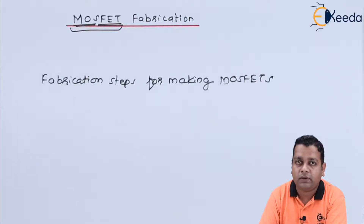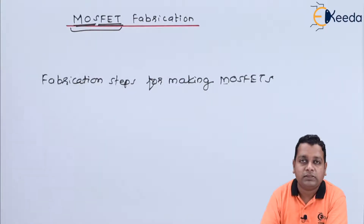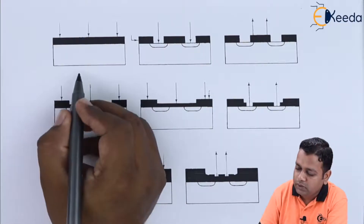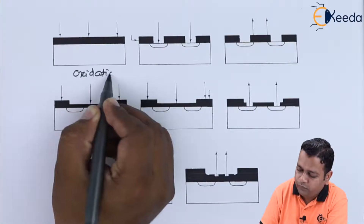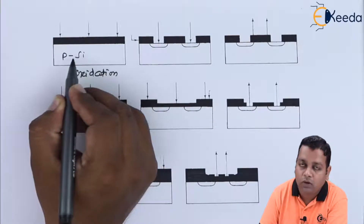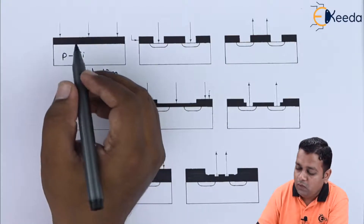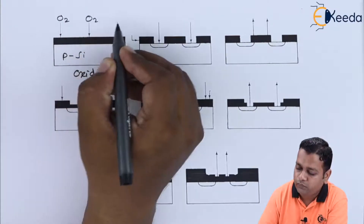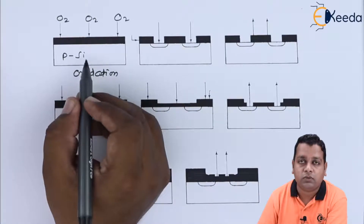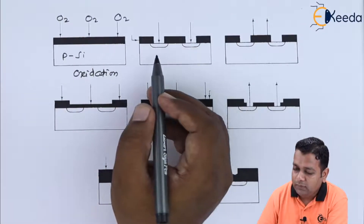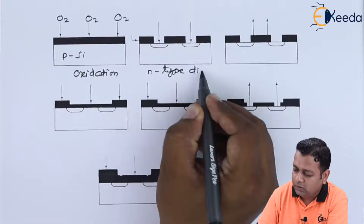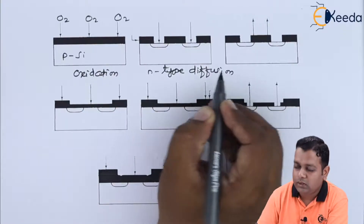We shall understand these fabrication steps using schematic diagrams. The first step is oxidation. In this step, we have a P-type silicon semiconductor substrate, and O2 is applied from the above surface for oxidation of this substrate material.